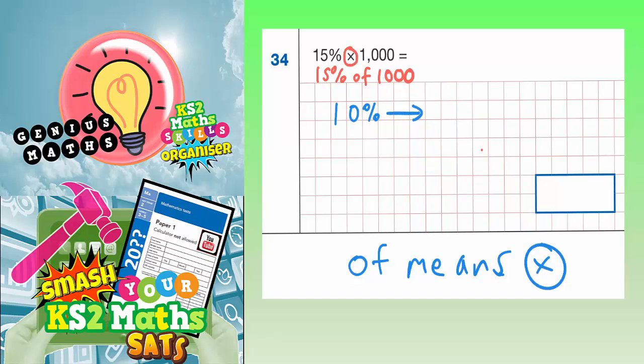So 10% of 1,000, you can knock a zero off or divide by 10. So that would be 100. And 5% is going to be half of that. Well, half of 100 is 50.